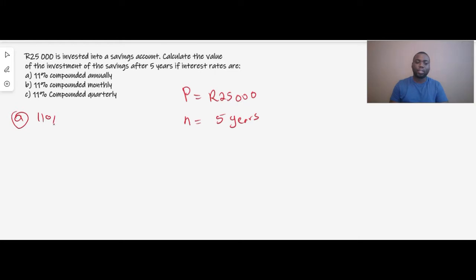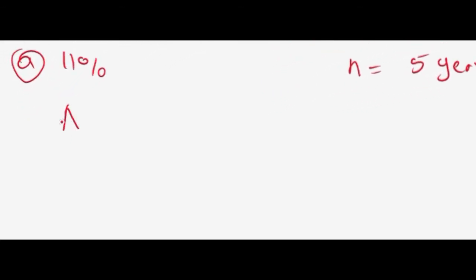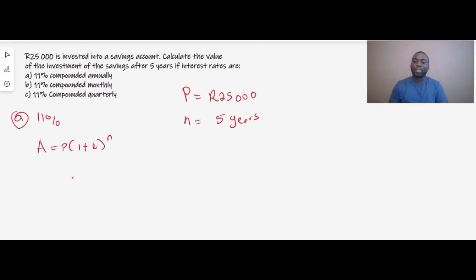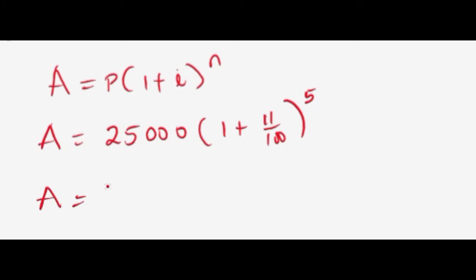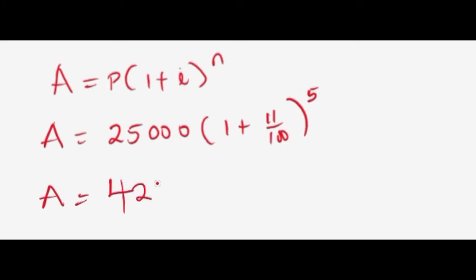To answer part (a), with an interest rate of 11%, we put the values into the compound interest formula. Whenever you have compounded annually, you do not divide by anything, so all we need to do is substitute our values in. The answer is 42,126.45.